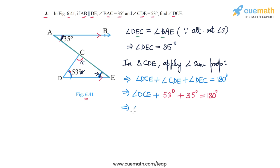So angle DCE plus 53 plus 35 is 88 degrees, and this sum is equal to 180 degrees. From here we get angle DCE is 180 minus 88, which is equal to 92 degrees.